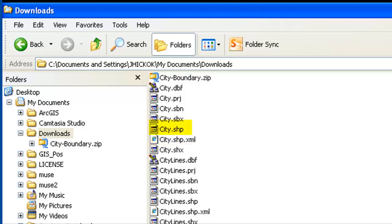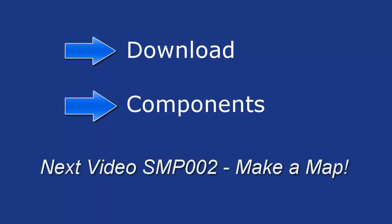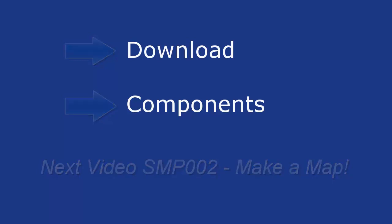And finally, SHP is your shapefile, which contains your geometry with your points, lines, and polygons. This concludes our first video. Now that we've downloaded some GIS data and examined its components, our next step will be to use this data to make a map using free and open source software. This will be in the next video titled SMP-002.